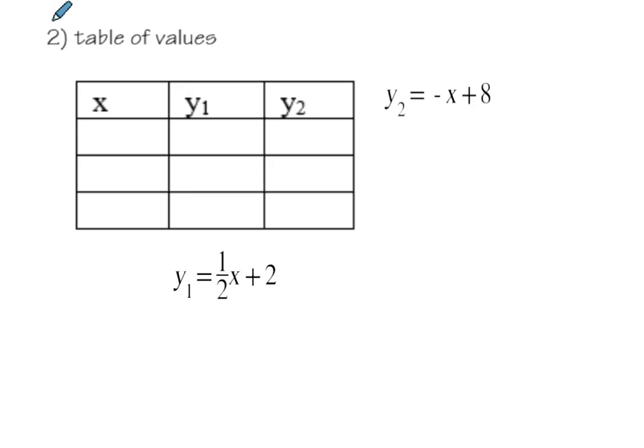Second method, we can create a table of values. So with our two rules, I called one y1 and the other one y2. It doesn't matter which one. And I'm going to put some values for x and find the values for y. So if I decide to put zero here, I'm going to come in my equation. I'm going to plug in zero. So one-half times zero plus two, that gives me two.